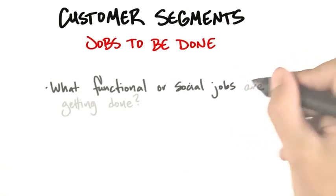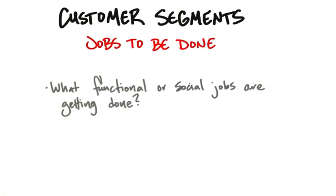what functional or social jobs are getting done? That is, does the customer want to perform or complete a specific task or solve a problem, or are they trying to look good, gain power or status?